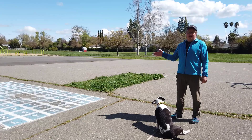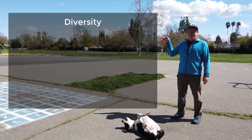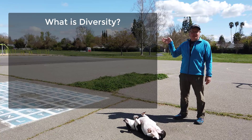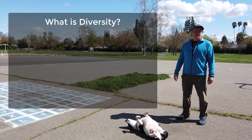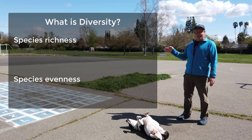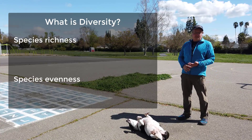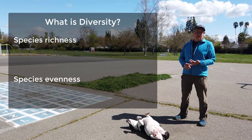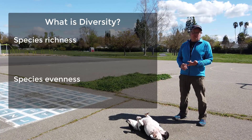For your first lab, you're going to be studying diversity. The question you should be asking yourself is: what is diversity? If you recall from the pre-lab, diversity is made of two components — species richness and species evenness. So if you're asked on an exam, how would you define species richness or species evenness?